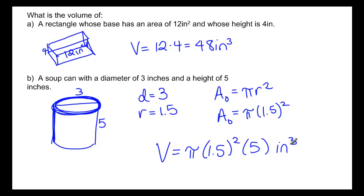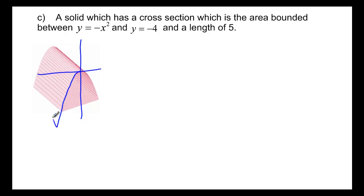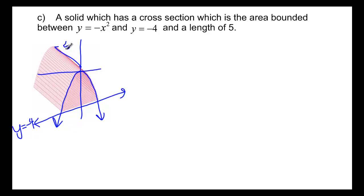Let's look at one more example that requires calculus. We have a solid which has a cross section that is the area bounded between y equals negative x squared and y equals negative 4, and has a length of 5 — meaning it extends back in that direction with a length of 5. We want to find its volume.